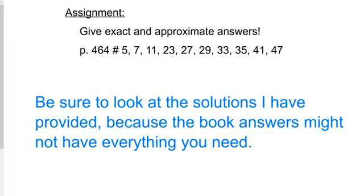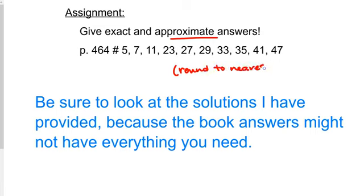Here is your assignment. It has a mixture from the easiest problems from the beginning of the lesson up to the more difficult ones at the end. Give exact and approximate answers as you saw me do. Round to the nearest thousandth — that's three numbers after the decimal. I've made a solution key for you since the book only gives approximate answers, so be sure to look at the solutions I've provided.